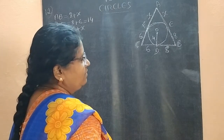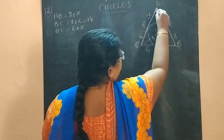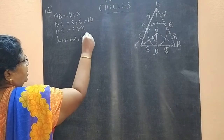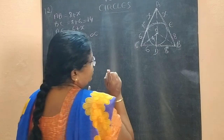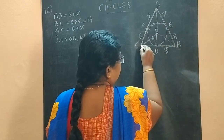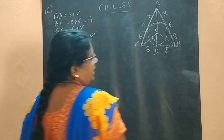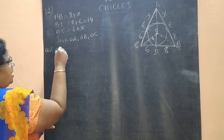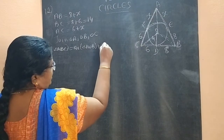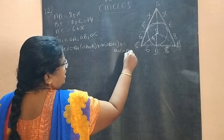In the first case, we join O-A, O-B, O-C. This gives us three triangles: AOB, BOC, and AOC. The total area of triangle ABC equals the sum of these three areas. So: Area of triangle ABC = Area of triangle AOB + Area of triangle BOC + Area of triangle AOC.